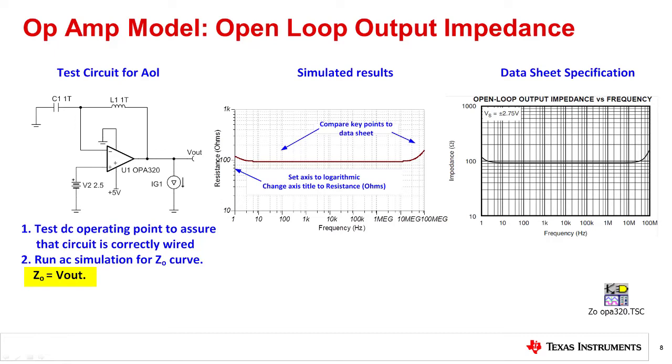For this simulation, the output voltage is equal to the open loop output impedance. That is, ZO in dB equals Vout in dB. Make sure that you change the vertical axis to logarithmic and scale to match the datasheet curve. In this case, you can see that the simulation result closely matches the datasheet specification. So this model has properly modeled open loop output impedance.